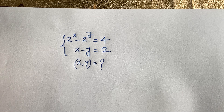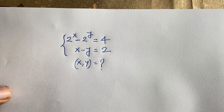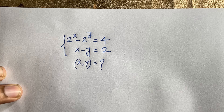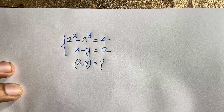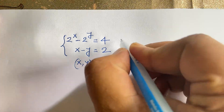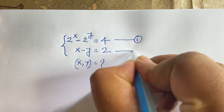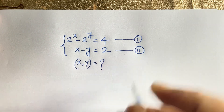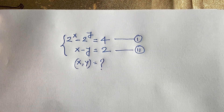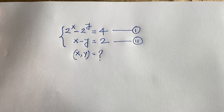Hello everyone. In this video we have solved this interesting math olympiad question. It is an exponential equation: 2 to the power x minus 2 to the power y is equal to 4, and x minus y is equal to 2. We need to find what y is equal to. This is our first equation and this is our second equation. We will find out the values of x and y in this exponential equation.